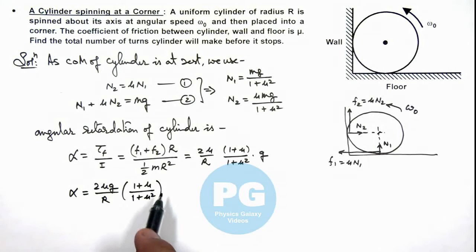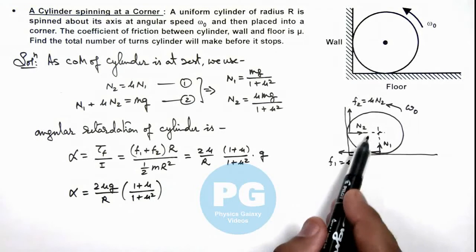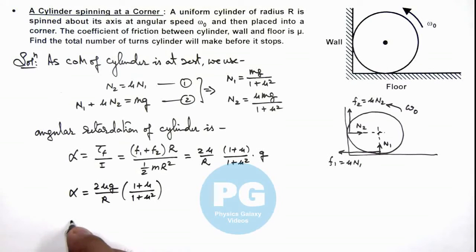And if we calculate the angle which the cylinder will rotate before it will come to rest, then we can write by speed equation theta is equal to omega not squared by 2 alpha.